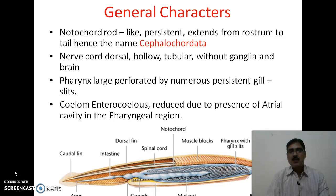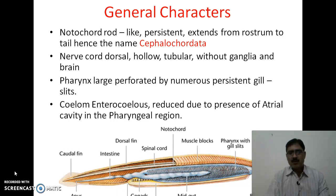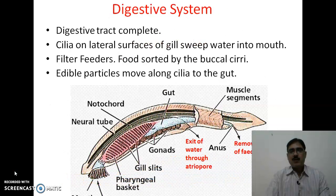The pharynx is large and perforated by numerous persistent gill slits. The coelom is enterocoeloous and reduced due to the presence of the atrial cavity in the pharyngeal region. These structures are visible in the diagram below, showing the pharynx with gill slits and muscle bands. A dorsal and ventral fin is present, as is the caudal fin; however, paired fins are totally absent and only unpaired fins are present.